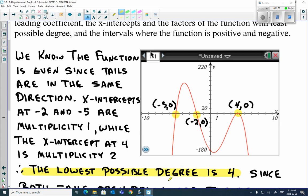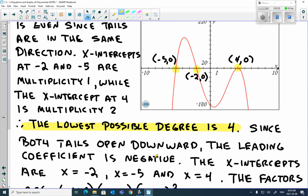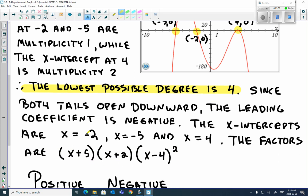Now, we also know that since both the tails open downward, the leading coefficient is negative. So the x-intercepts are negative 2, negative 5, and 4. So here's the factors. Remember, if it's an x equals negative 2, it's going to be an x plus 2. If it's an x equals negative 5, it's going to be x plus 5. And the 4 is going to be x minus 4.